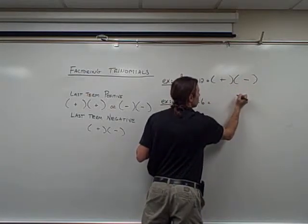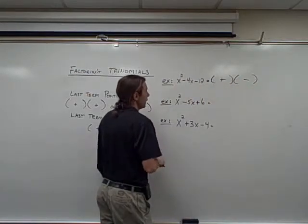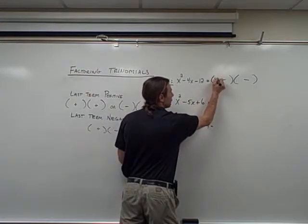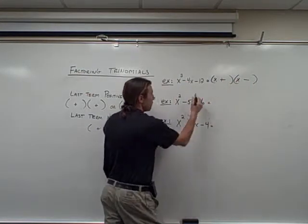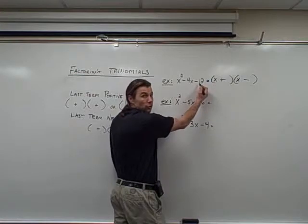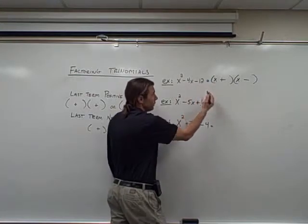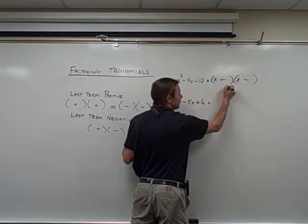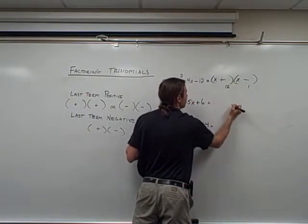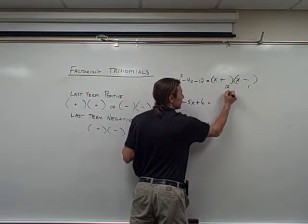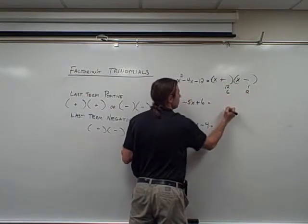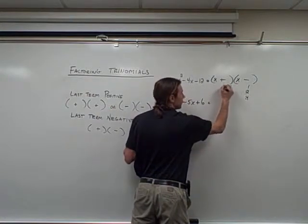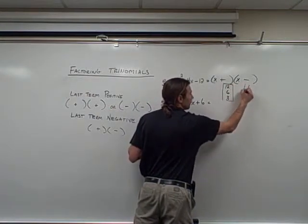So I'll set up the structure with one positive and one negative. Since I have x squared at the beginning, I'll list x and x. The last term is negative 12, so I want to choose factors of 12. I have 12 and 1, 6 and 2, and 3 and 4 — those are my possibilities.